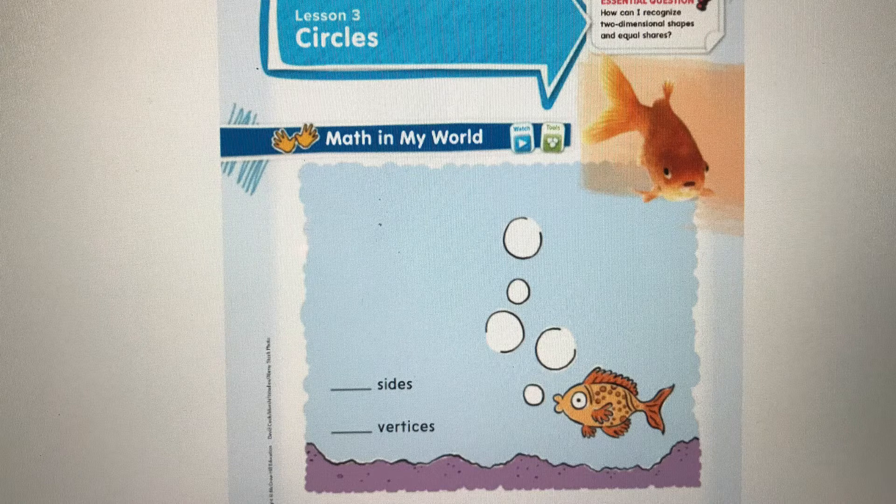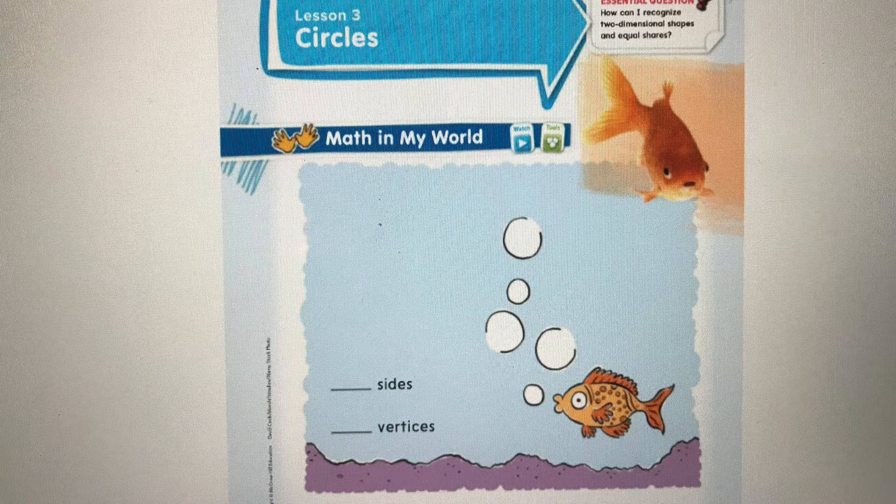And then, I want you to draw four more bubbles that the fish could have blown. Then, I want you to describe the shapes by writing how many sides and vertices there are. So get your pencil out and see what you can do. Close the circles and draw four more circles and let's see what you get.